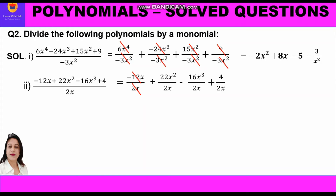Simplifying each term: -12x ÷ 2x: 12/2 = 6 and x cancels, giving -6. Then 22x²/(2x): 22/2 = 11 and x²/x = x, giving +11x. Then -16x³/(2x): 16/2 = 8 and x³/x = x², giving -8x². Finally 4/(2x): 4/2 = 2 and x remains in denominator, giving +2/x. The full answer is -6 + 11x - 8x² + 2/x.